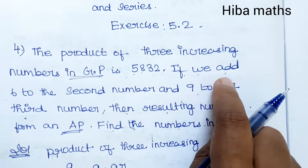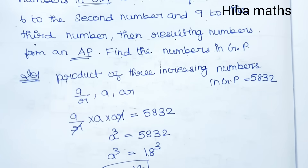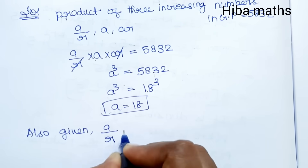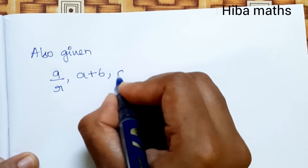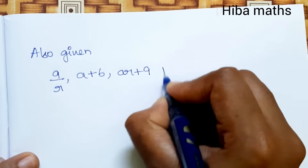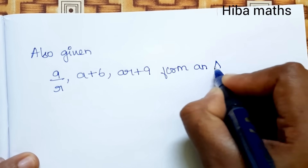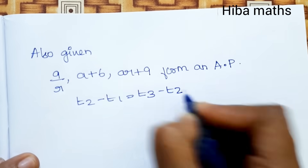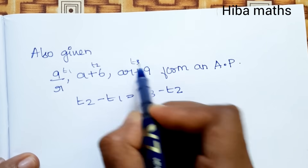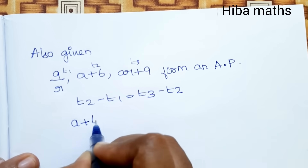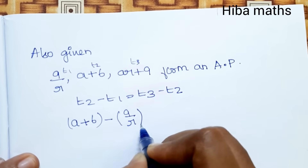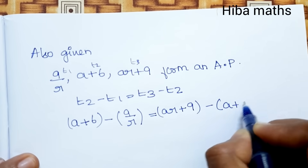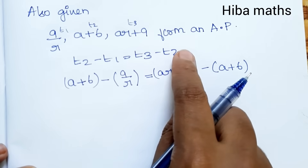Second condition: if we add 6 to the second number and 9 to the third number, the first number has no change. So the three terms become a/r, a plus 6, and ar plus 9. These form an AP. For AP, T2 minus T1 equals T3 minus T2, which means 2T2 equals T1 plus T3.